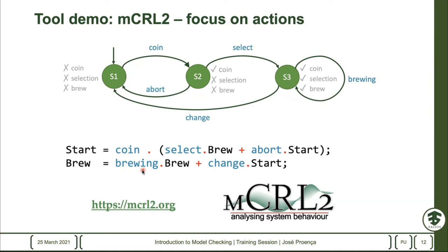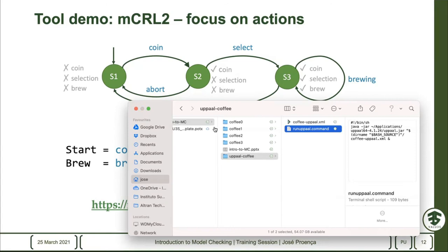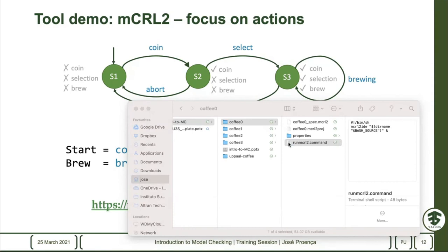This 'plus' captures the choice between either selecting and starting to brew, or aborting and returning to the start state. Once we are brewing — which is the S3 state — we can perform brewing and return to that state, or we can choose to give some change and come back. You can go further than this and build composition of systems that have synchronized actions.